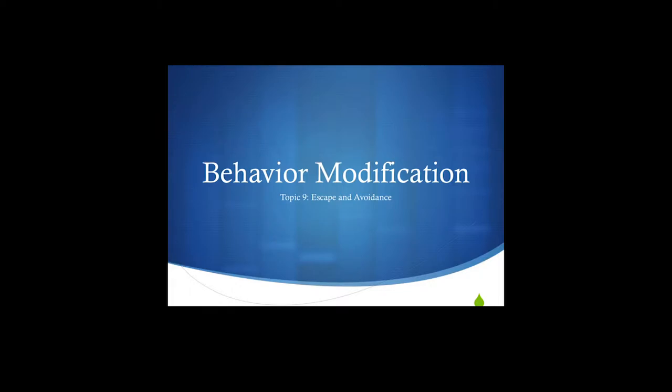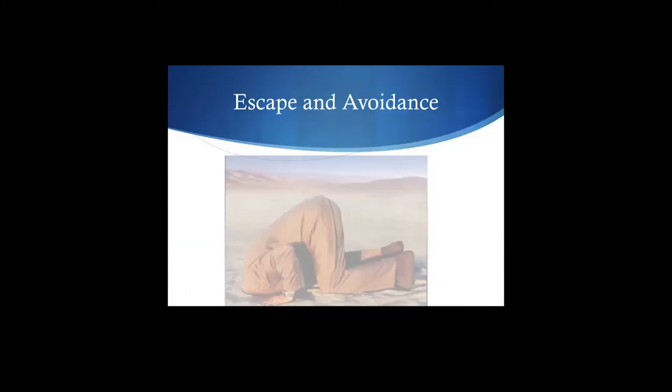All right, I hope you're ready. We're back for escape and avoidance. Negative reinforcement - that's what we're really talking about with regard to escape and avoidance. Again, we're going to strengthen a behavior, but we're going to do so by contingently removing or avoiding a stimulus.